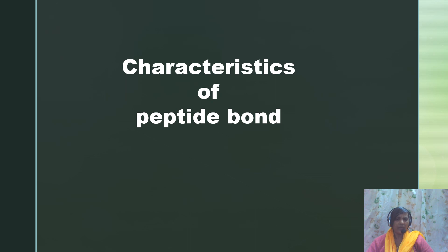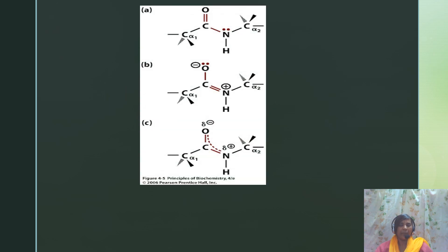Now that we know how a peptide bond is formed, let us discuss its characteristics. A peptide bond has some interesting characteristics which play a role in the three-dimensional structure of a protein molecule. Looking at the first structure, the C–N is a single bond and the nitrogen has an unshared pair of electrons, while C=O is a double bond. In the second structure, C–O becomes a single bond and C=N is a double bond.